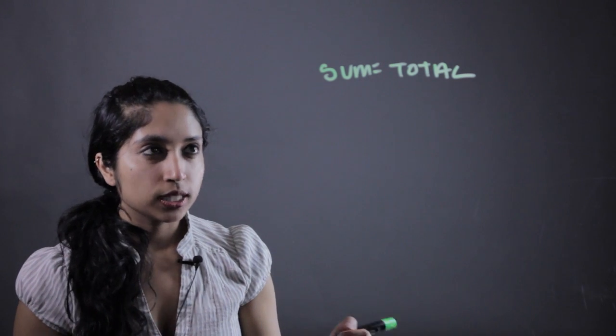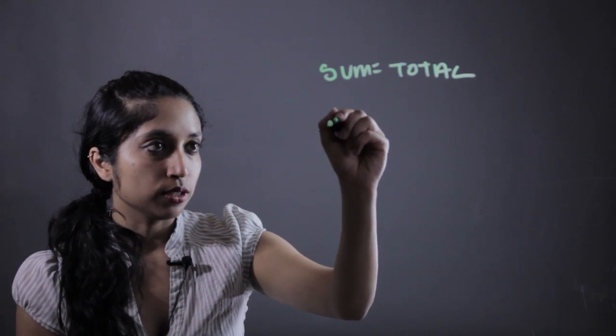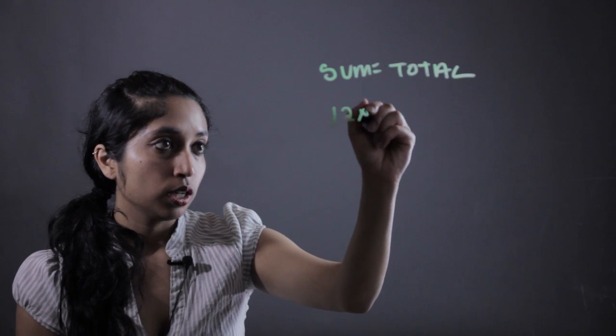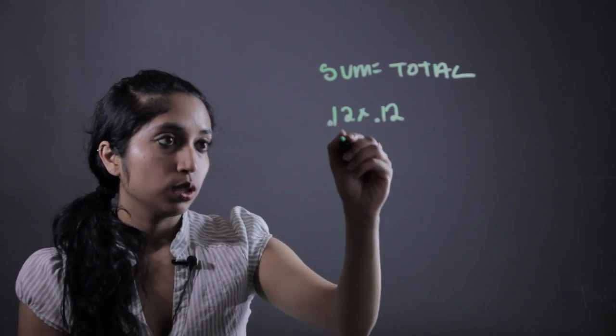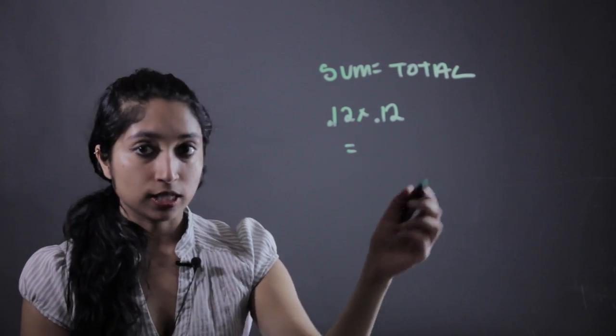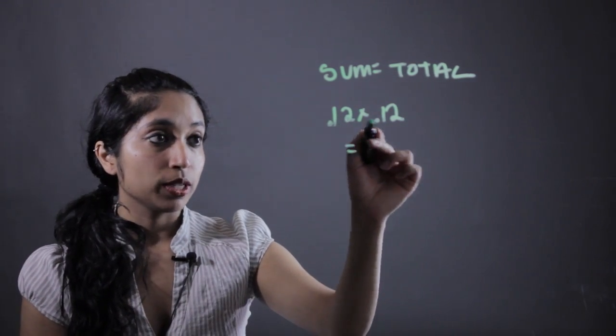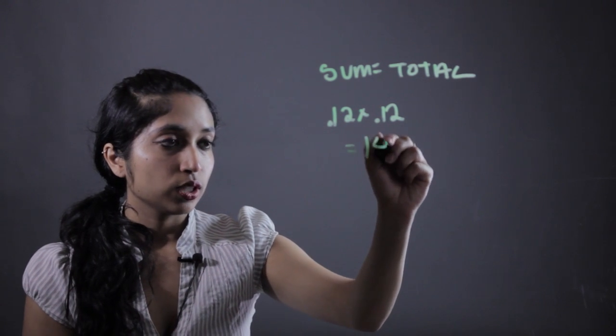So I'm going to work through a quick example to help you understand what exactly that means. Say we're multiplying .12 by .12. What you're going to want to do is just don't worry about the decimals at first. We're just going to multiply 12 by 12, which is going to give us 144.